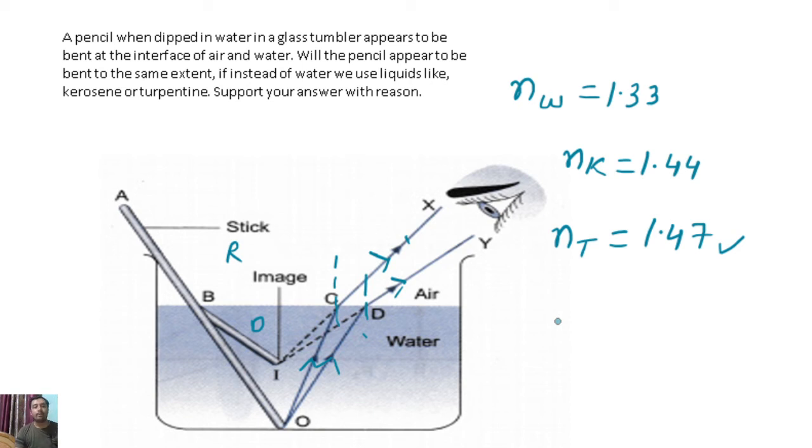The amount of bending depends on the refractive index. Greater the refractive index of the medium, greater will be the bending. Since turpentine has the maximum refractive index, it will have the highest amount of bending.